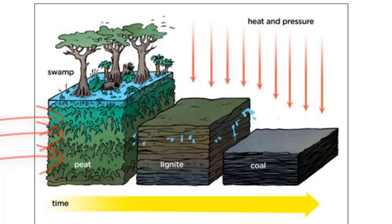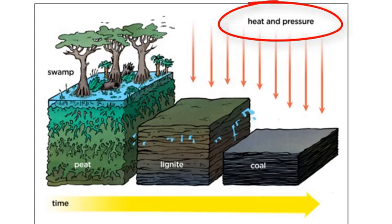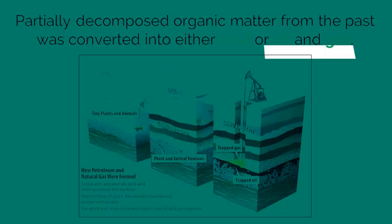Over time, meaning millions of years, this partially decomposed carbon will be put under high pressure and heat, which forms coal. Aside from coal, oil and natural gas, which are two carbon sinks, are created in similar ways.